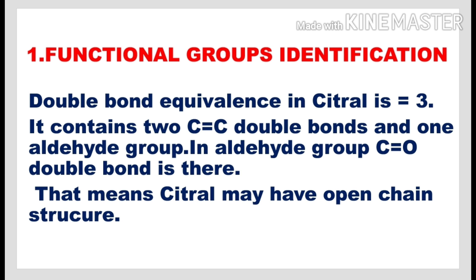All these reactions prove that citrol contains an aldehyde group in it. The double bond equivalents in citrol is 3 — it contains two C-C double bonds and one aldehyde group, and we know that in an aldehyde group a double bond exists between the carbon and oxygen atom. That means citrol may have an open chain structure and may not have any ring in it.